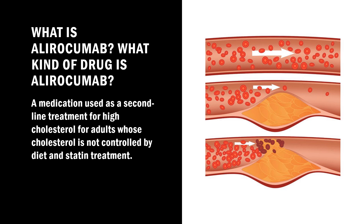Alirocumab, sold under the brand name Praluent, is a medication used as a second-line treatment for high cholesterol for adults whose cholesterol is not controlled by diet and statin treatment. It was approved for medical use in the United States and in the European Union in 2015.